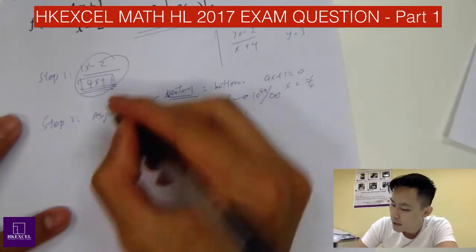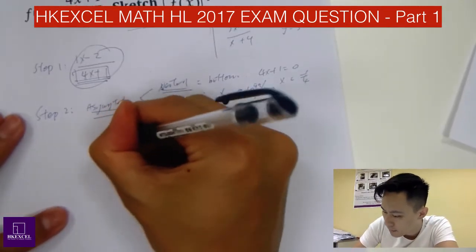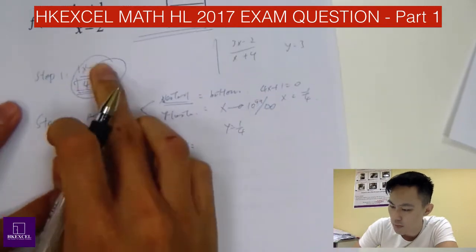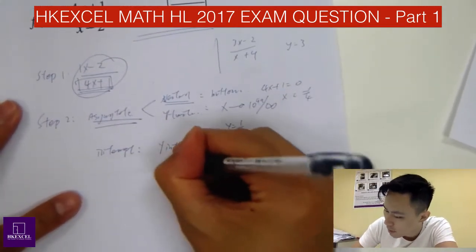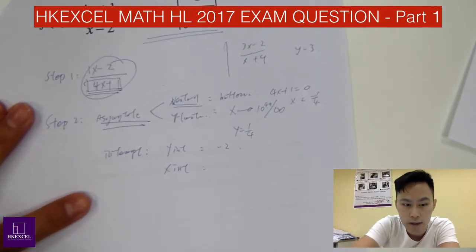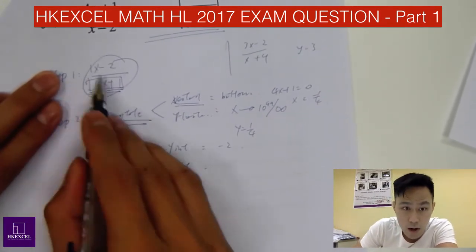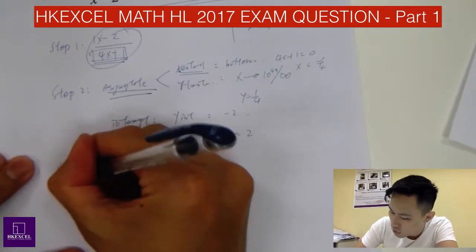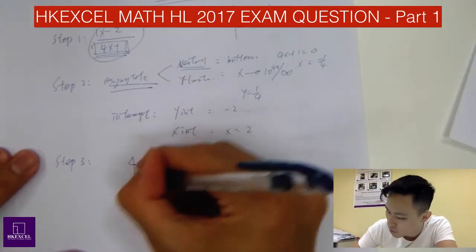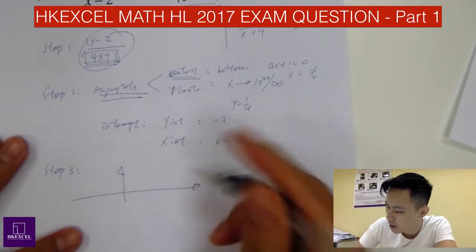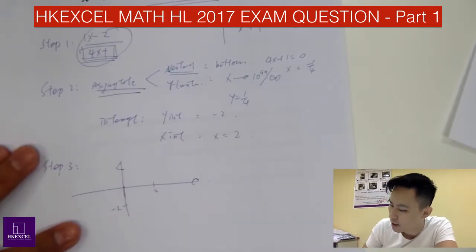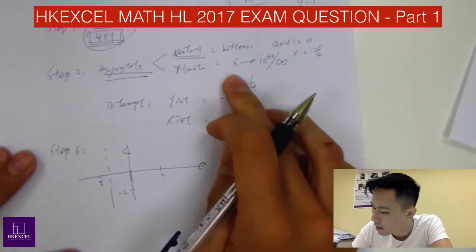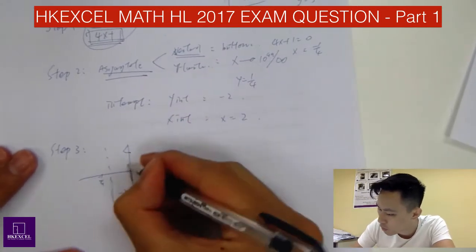After finding the asymptotes, find the intercepts. For the y-intercept, substitute x = 0, which gives y = -2. For the x-intercept, set y = 0, so x - 2 = 0, giving x = 2. The vertical asymptote is at x = -1/4 and the horizontal asymptote is at y = 1/4.